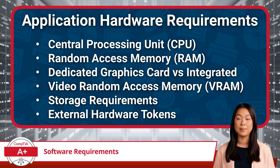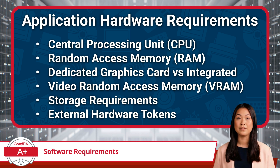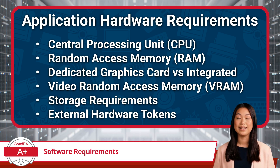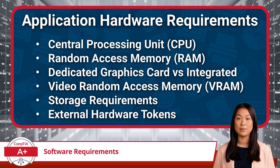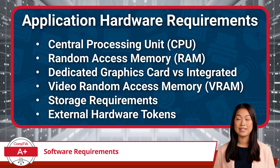If your CPU lacks these features, you might encounter issues with hypervisors or virtual machines. The amount of system RAM is crucial for overall performance. General productivity applications may run fine on 4 GB to 8 GB of RAM, but demanding software like virtual machines, large databases, or complex simulations can require 16 GB or more. When installing graphic-intensive applications, it's important to consider whether your system uses a dedicated graphics card or integrated graphics. Dedicated graphics cards, such as those from NVIDIA or AMD, have their own video RAM and processing power, enhancing performance in tasks like 3D rendering, gaming, and video editing. Conversely, integrated graphics share the system's RAM and are built into the CPU, leading to lower frame rates and less efficient handling of graphic-intensive applications.